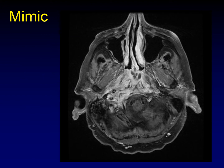This example looks like nasopharyngeal carcinoma — it's extensively enhancing, very aggressive, coming through the clivus, into the carotid space, extending laterally. But this is actually skull base osteomyelitis. Particularly in elderly individuals, nasopharyngeal carcinoma and skull base osteomyelitis look identical. You always have to consider both in the differential until you have tissue sampling — it's a classic mimic and a classic mistake to call skull base osteomyelitis nasopharyngeal carcinoma.